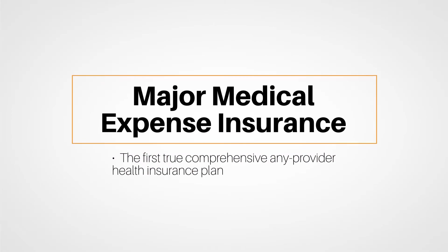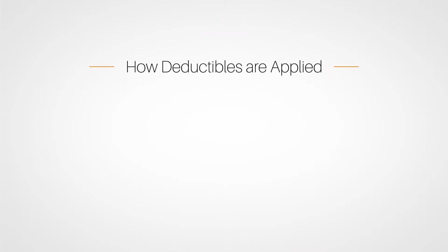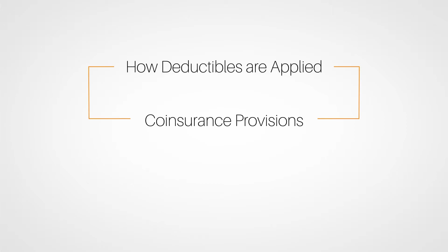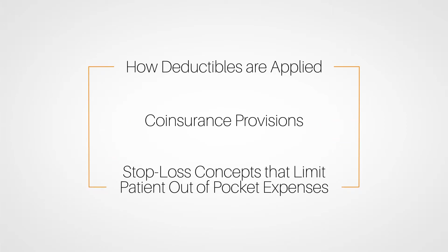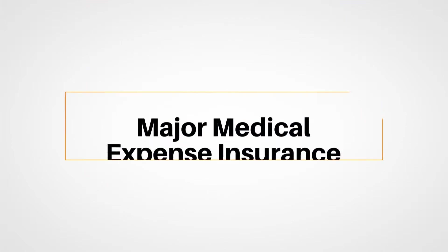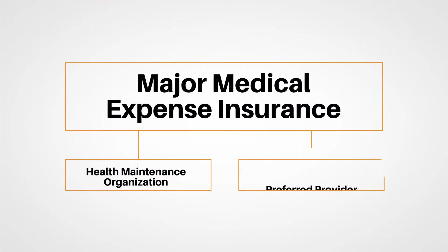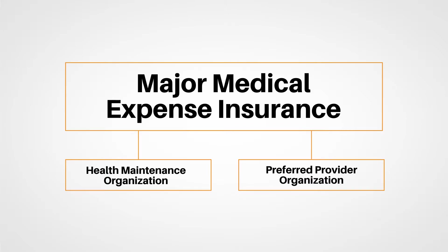We also reviewed major medical expense insurance, the first true comprehensive any-provider health insurance plan. Make sure to review the terms, concepts, and other issues associated with these plans. This includes how deductibles are applied, coinsurance provisions, and the stop-loss concepts that limit the patient's out-of-pocket expenses. We next explored HMOs and PPOs, offshoots of major medical coverage. These plans have different rules, restrictions, and network affiliations not found in major medical.